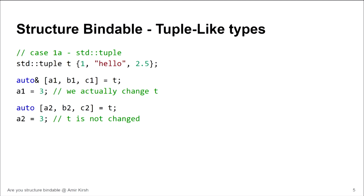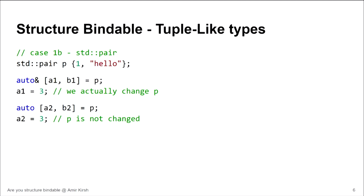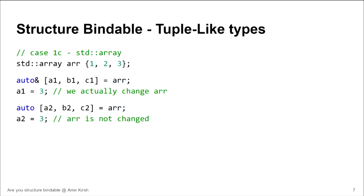This syntax for structure binding is quite useful. For example, when you loop over entries in a map you don't need to use `.first` and `.second` — you can take the key and value directly into properly named variables. You can do the same for pair, since pair also has the `get` function. You can even do that with `std::array` because it's a tuple-like type: it has the `get` function, `tuple_size`, and `tuple_element`.